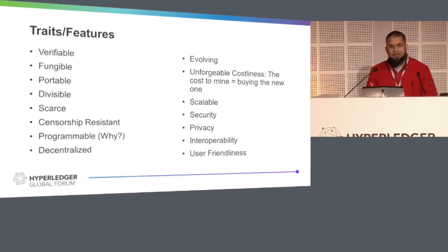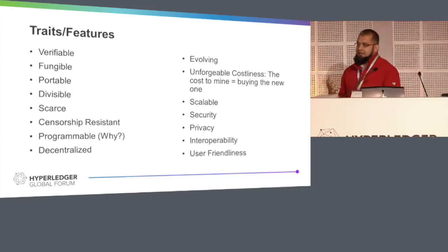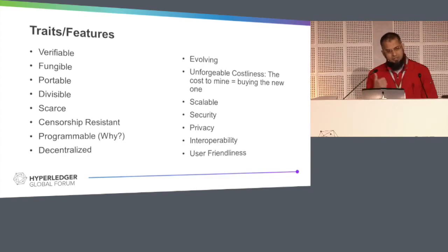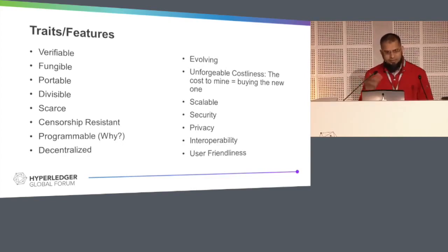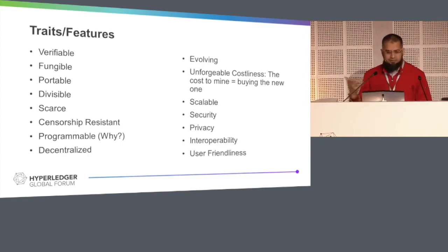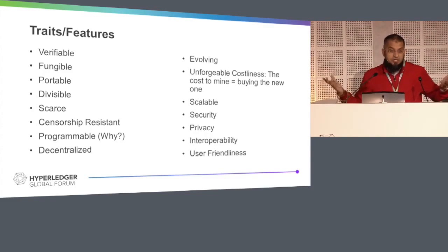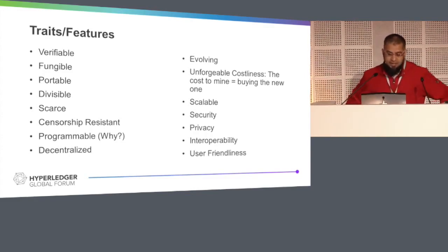What are the traits and features we'd like to see in the Bitcoin or blockchain DNA across the whole system? Clearly verifiable, simple money traits: fungible, portable, divisible, scarce, censorship resistant, and programmable.